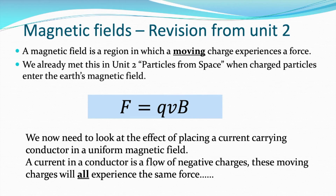We now need to look at the effect of placing a current-carrying conductor in a uniform magnetic field. What happens if we place a wire that's carrying a current in a magnetic field? A current in a conductor is a flow of negative charges. These moving charges will all experience the same force, because they're all moving in the same direction, at the same speed, they've all got the same charge, and they're all in the same magnetic field.